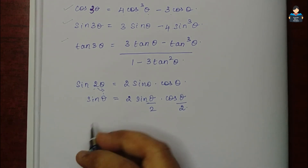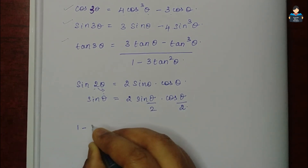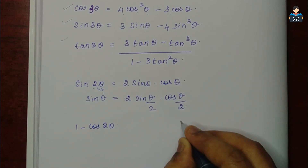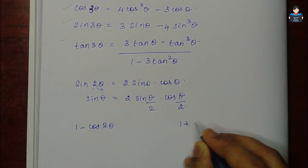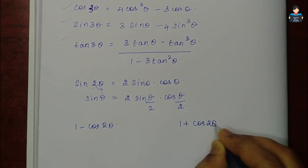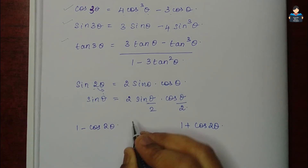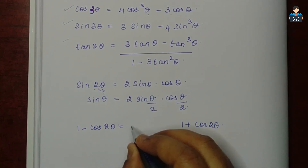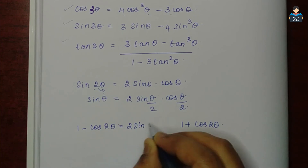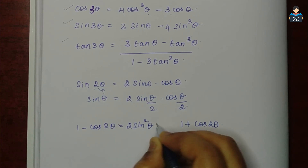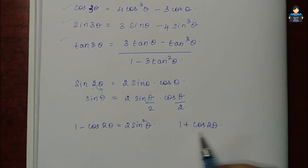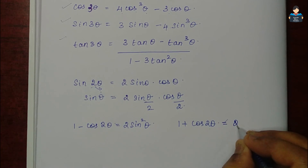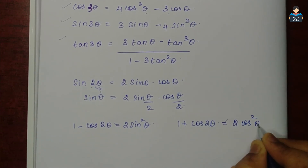The next identities are: 1 - cos2θ = 2sin²θ, and 1 + cos2θ = 2cos²θ. So, 1 plus gives cos, and 1 minus gives sin.